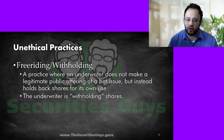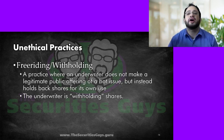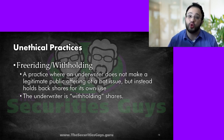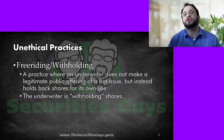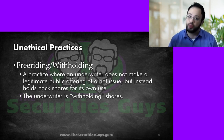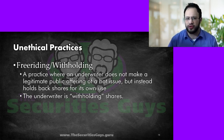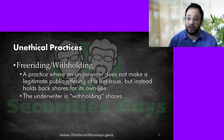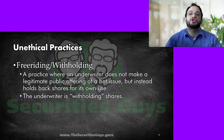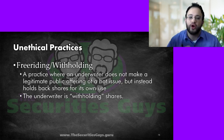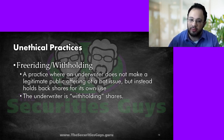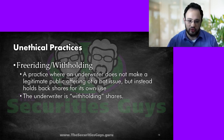Free riding or withholding is a practice where an underwriter does not make a legitimate public offering of a hot issue. Underwriters are investment banks designed to bring issues to market, and they usually work in a syndicate — a group of underwriters. One of those underwriters might think the stock is worth more and want to hold on to a few shares so that in a few weeks when the price goes up, they can sell them and make a profit. But an underwriter must make a legitimate public offering of the stock at the public offering price. They are not allowed to withhold it to try and sell it for more later.